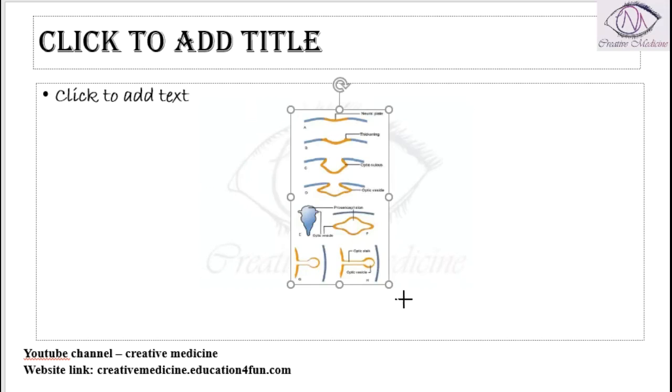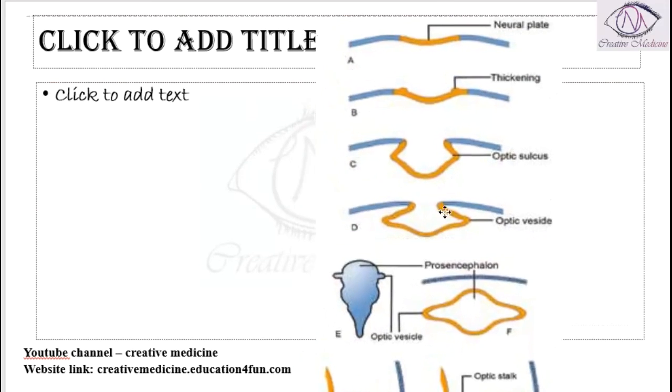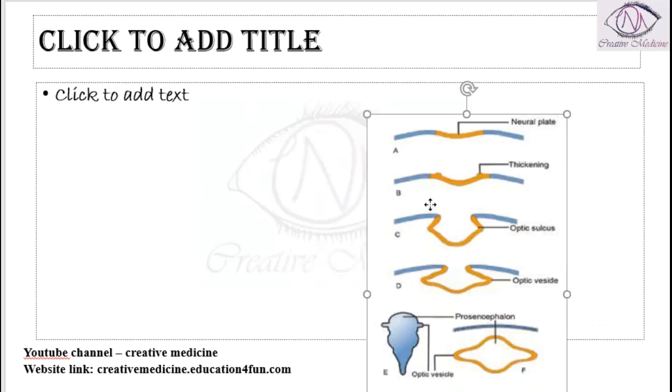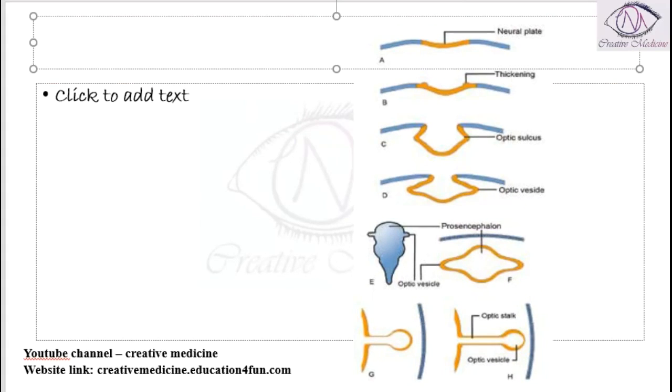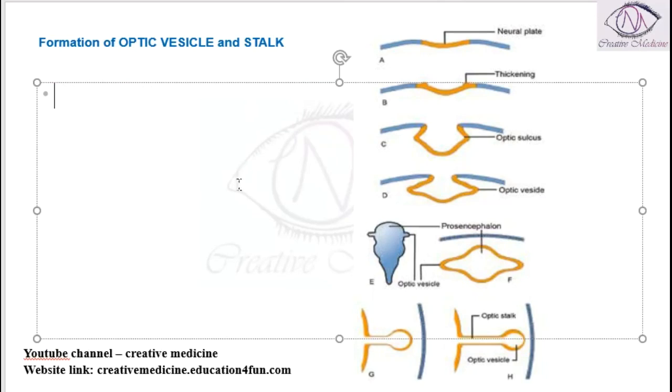So now, formation of optic vesicle and the optic stalk. This is the ectoderm in that we have the neural plate. The neural plate on either sides has development of thickening which are called as neural thickenings.